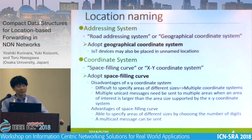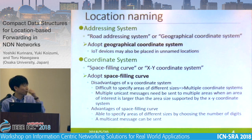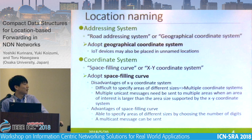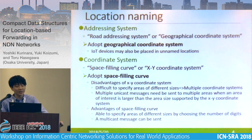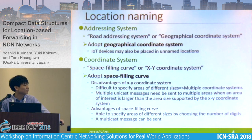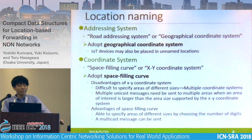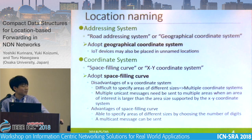In XY coordinate systems, it is difficult to specify areas of different sizes. Assuming that unicast messages are sent to each area, multiple unicast messages need to be sent to multiple areas when an area of interest is larger than the area size supported by the XY coordinate system. On the contrary, in the space-filling curve, it is able to specify areas of different sizes by choosing the number of digits, and a single multicast message can be sent.